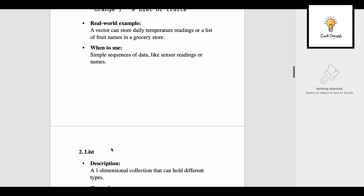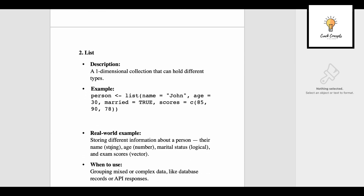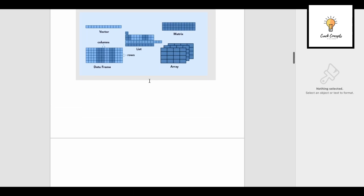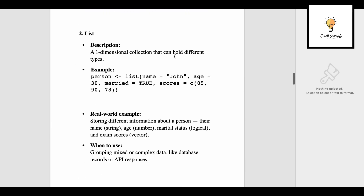The second data structure is list — one step ahead. This is also a one-dimensional collection, but it can hold different data types. As you can see, list is also 1D but it can have values of different data types.